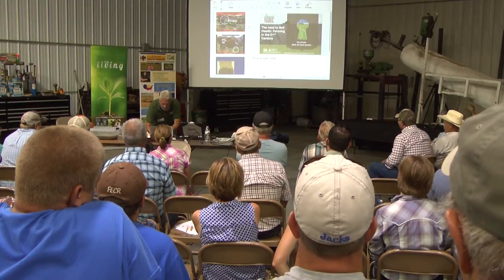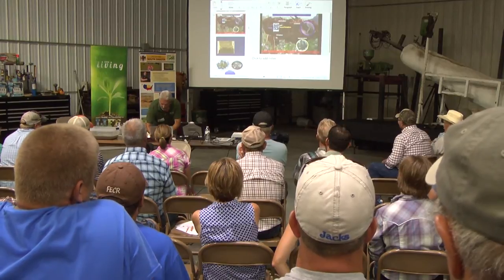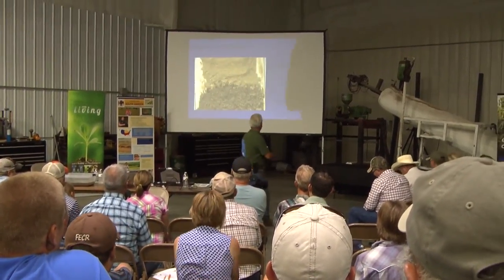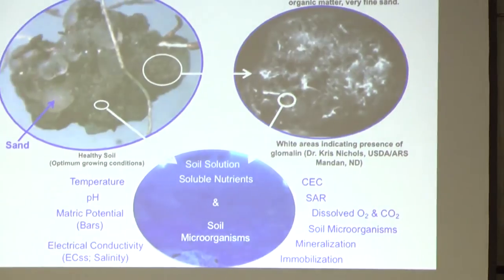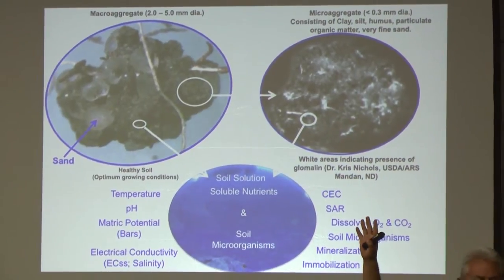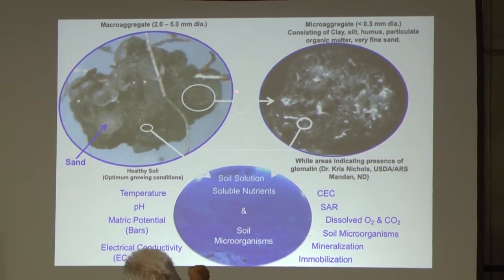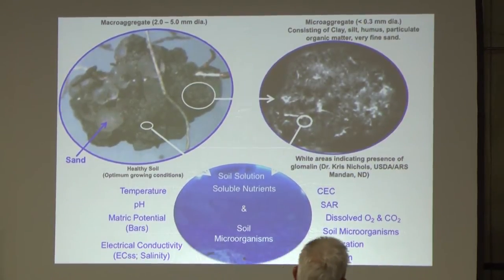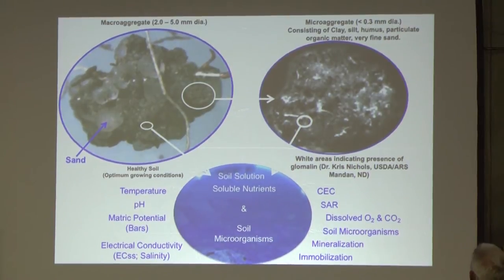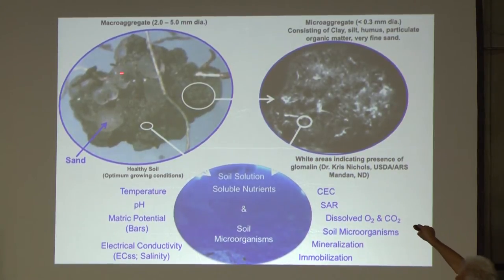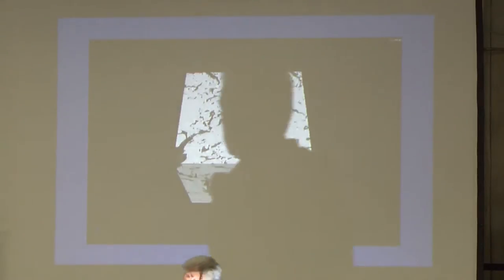Let's talk about aggregates. Look at the coating on this grain of sand — biology and plants create those organo-mineral complexes, those cementing agents. That is an aggregate. When you do that, you have cation exchange capacity, you can regulate temperature, regulate pH, and you don't lose nutrients from that sand particle.